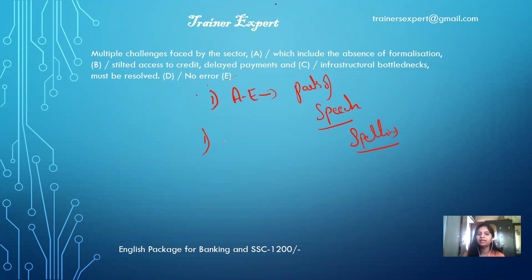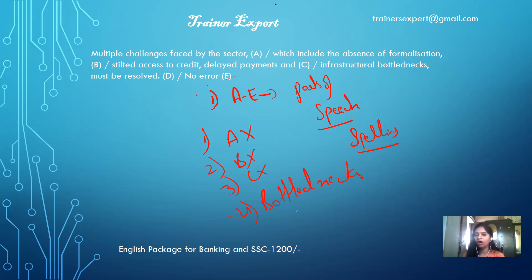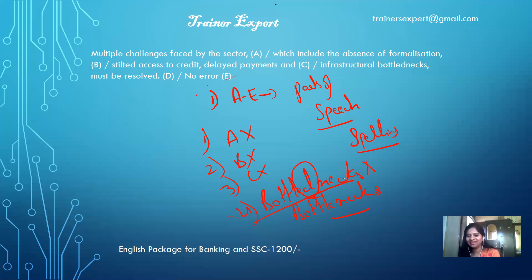Let's go through each part. 'Multiple challenges faced by the sector' — no spelling mistake. 'Which includes the absence of formalization' — no spelling mistake. 'Filtered access to the credit, delayed payments' — no spelling mistake. Fourth: 'infrastructural bottled next must be resolved.' Here I used 'bottled next.' The correct word is 'bottlenecks' — our pronunciation will never say 'bottled next.' So the error is in part four.